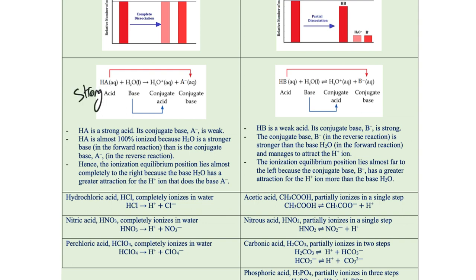In this case, water — since we said from the first lesson it's an amphoteric species — can act sometimes as a base or as an acid. Here, it's going to gain the H+ donated by the strong acid, and when it accepts it, it will form the hydronium ion. So HCl will give me H+ plus Cl-. We can also write this as HCl plus H2O gives H3O+ plus Cl-. Both are correct ways of representing the complete dissociation of a strong acid in water.